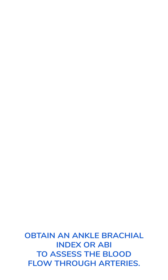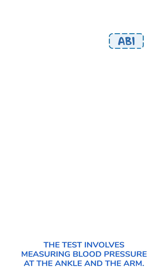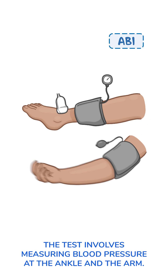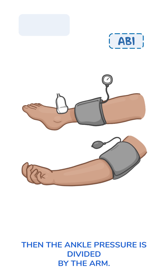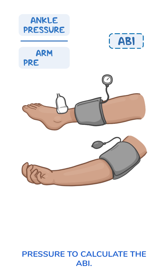Now that you suspect PAD, obtain an ankle brachial index, or ABI, to assess the blood flow through arteries. The test involves measuring blood pressure at the ankle and the arm. Then, the ankle pressure is divided by the arm pressure to calculate the ABI.